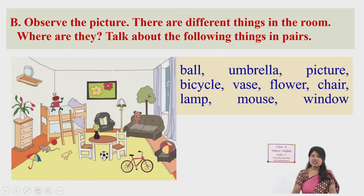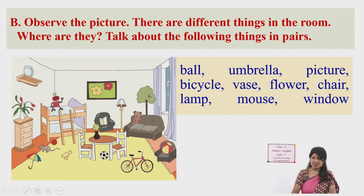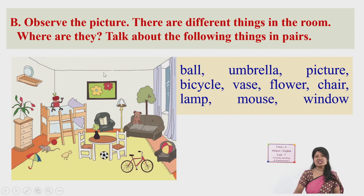Where is the umbrella? The umbrella is on the floor. Where is the picture? It's on the wall. Where is the bicycle? The bicycle is in front of the sofa. Where is the vase? It's on the rack. Where is the flower? It's in the vase. Where is the chair? It is beside the table. The lamp is beside the sofa. The mouse is between the ball and the umbrella. The window is behind the sofa. One person asks the question and the other replies.